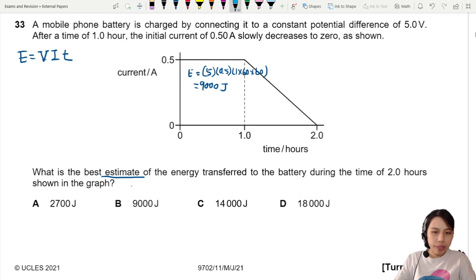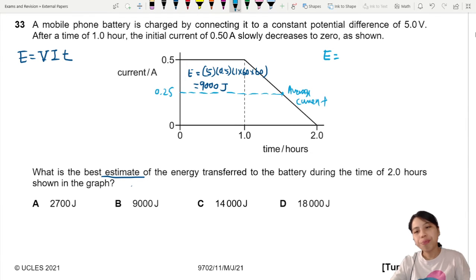Then the problem comes in this second part. The current is changing up and down. So how do we know what to put inside our E equals VIT? I think what we can do is find an average value. And since this is linear, decreasing a straight line, your average value would be somewhere in between. So 0.25 will be the average current throughout this whole period, although it is changing.